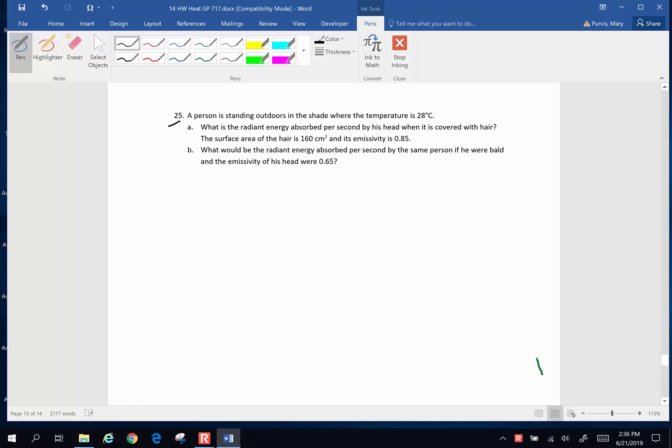All right, number 25. A person is standing outdoors in the shade where the temperature is 28 degrees Celsius. What is the radiant energy absorbed per second by a head that is covered with hair? The surface area of the hair is 160 cubic centimeters and has an emissivity of 0.85.